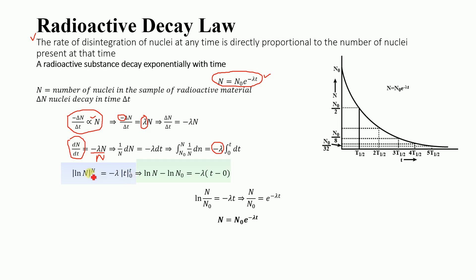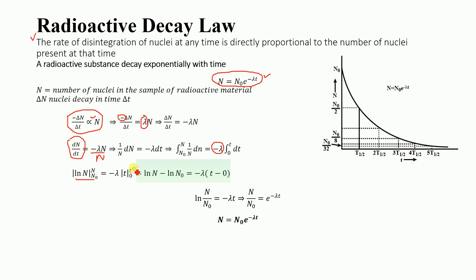Substituting the limits, putting them into the left-hand side of the equation, we get ln(N) − ln(N₀). On the right-hand side, −λ is a constant, and we get t as the upper limit.